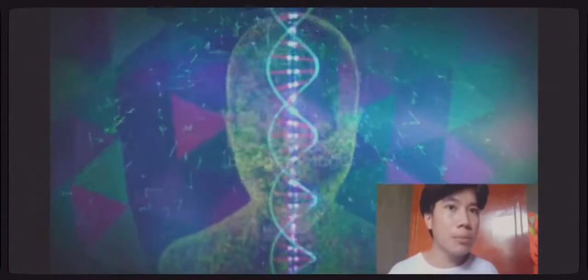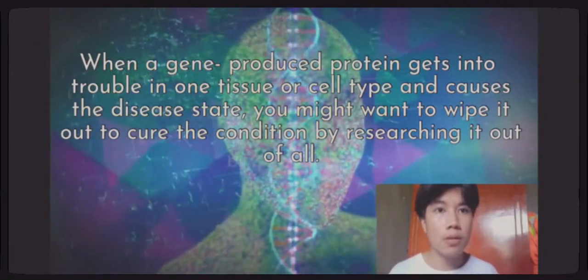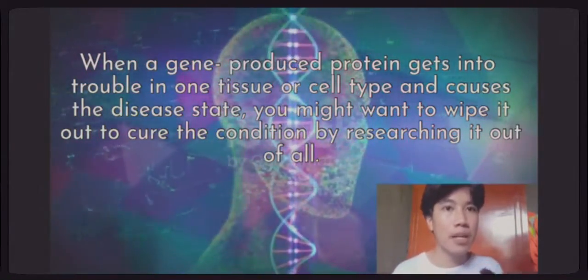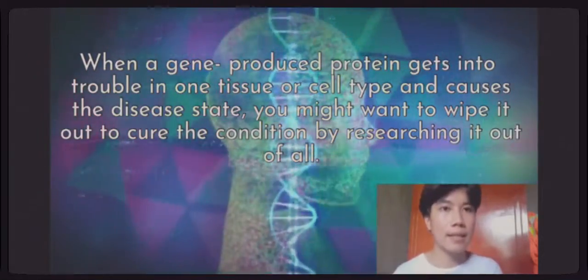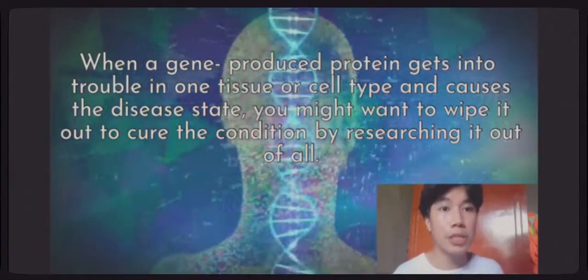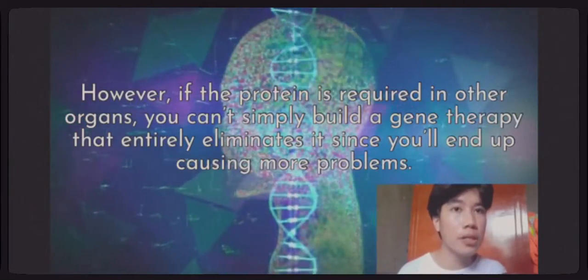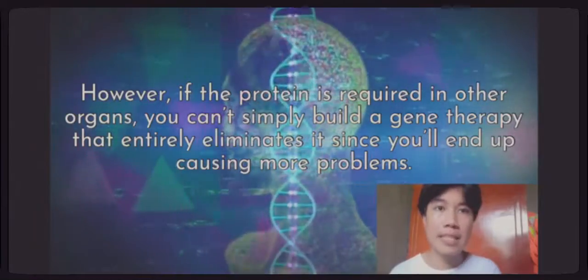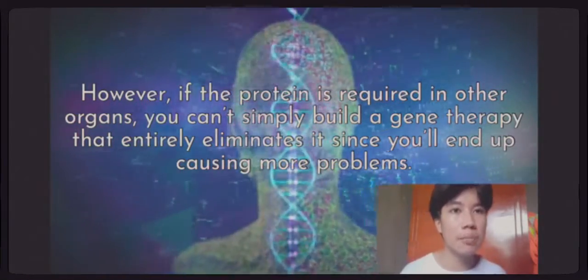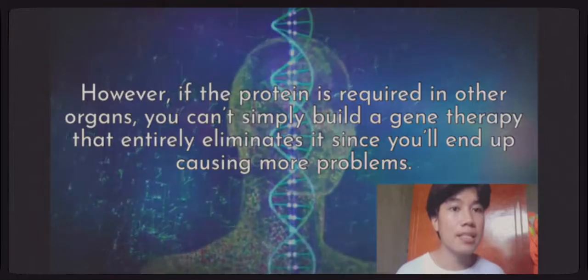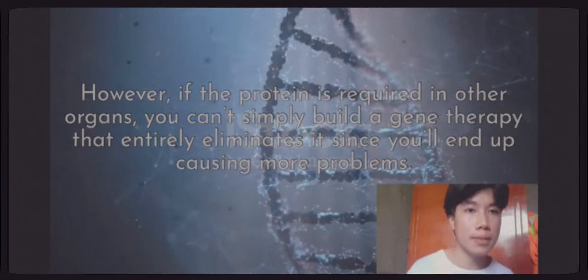When the gene-produced protein gets into trouble in one tissue or one cell type, it can cause a gene to become inactive. You might want to eliminate it to cure the condition. However, if the protein was required in other organs, simply building a gene therapy targeting it entirely can end up causing more problems.